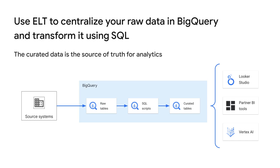Customers who do ELT centralize their raw data from disparate systems in BigQuery, resulting in thousands of incompatible data tables that need to be transformed before doing any analytics. We then have various transformation layers with different levels of data curation that lead to a final layer — a single source of truth — from which we serve the curated data.